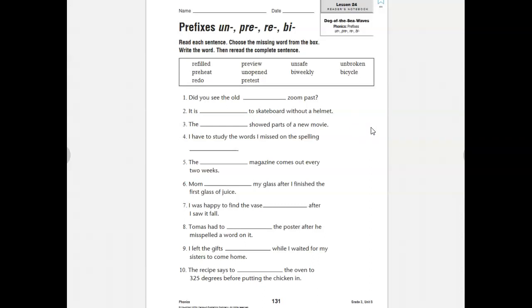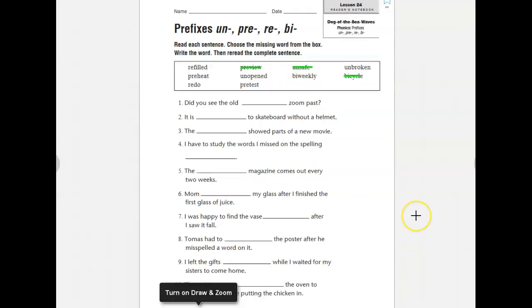Number two, it is blank to skateboard without a helmet. I would definitely think this one would be unsafe, as in not safe to skateboard without a helmet. Always wear your helmet, guys. Number three, the blank showed parts of a new movie. I'm thinking this one is probably preview. The preview is what you see before you get to watch the new movie. They show you parts of it to get you interested in wanting to watch it.